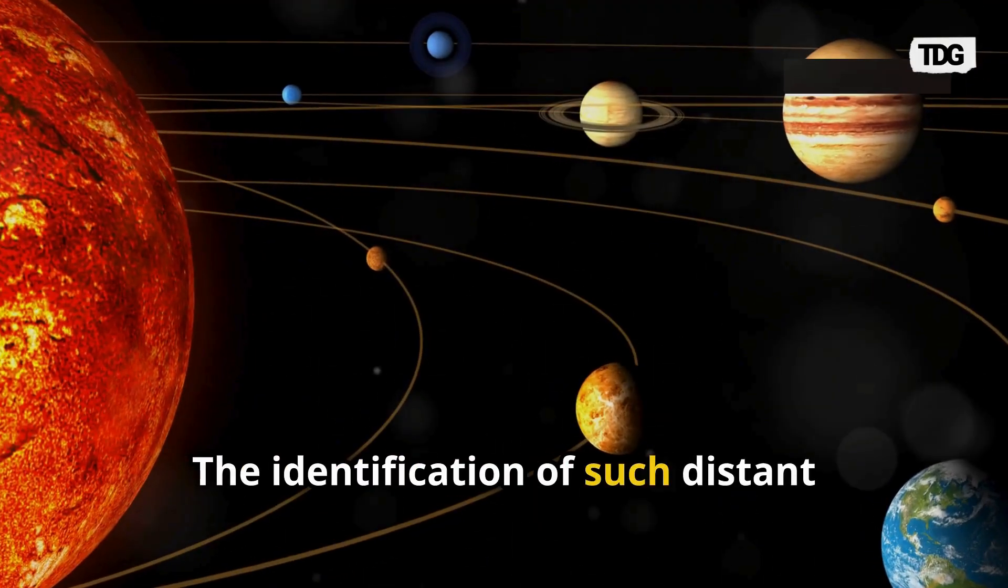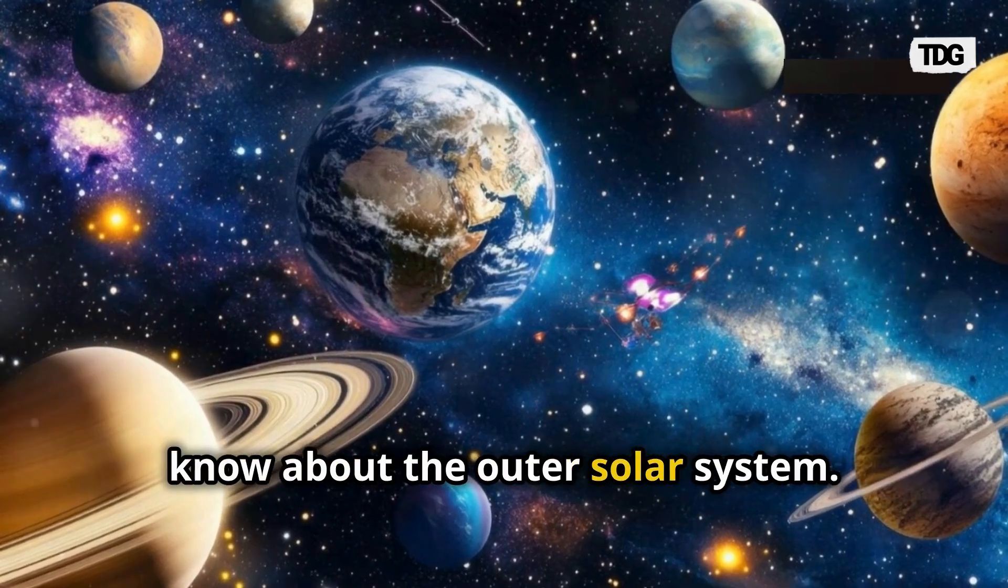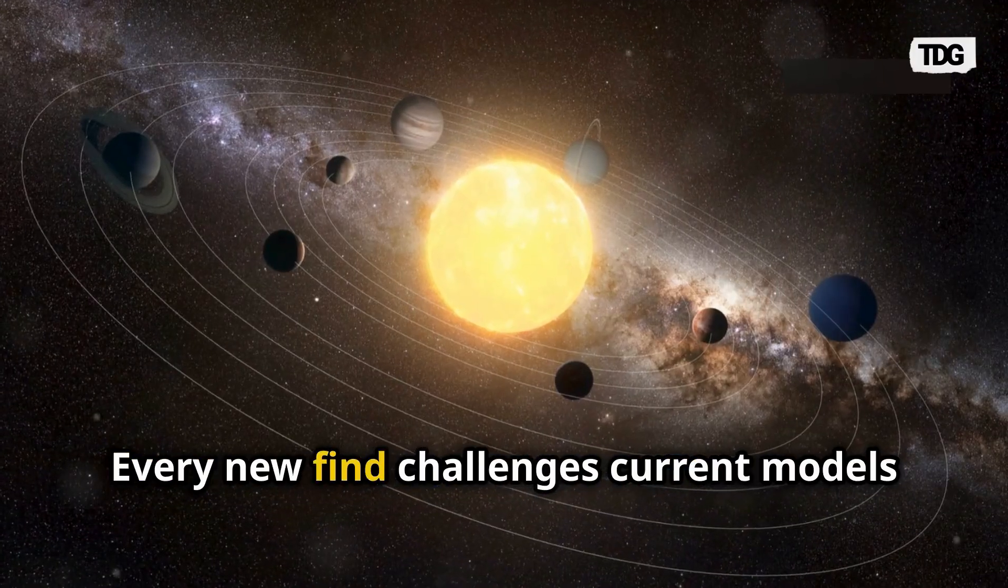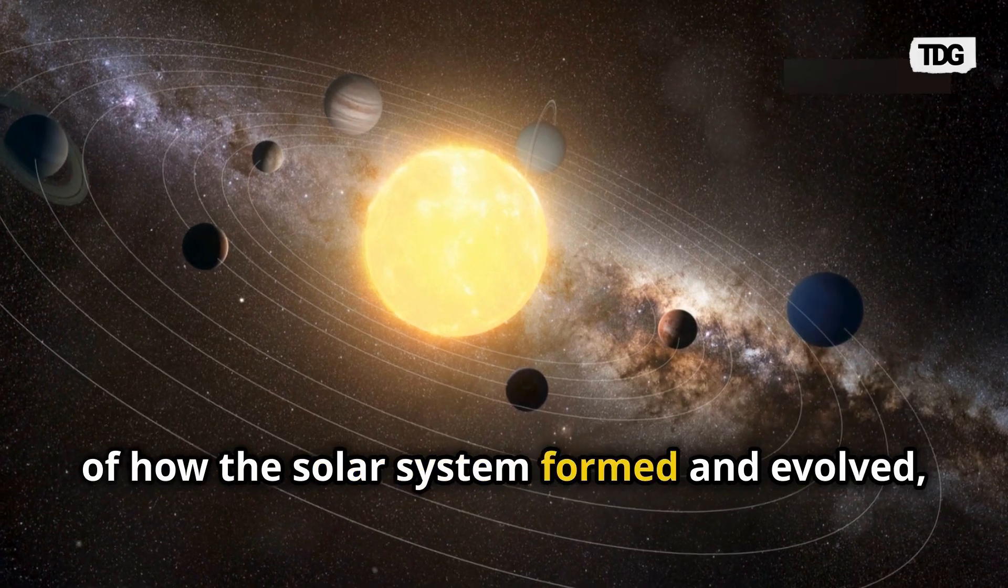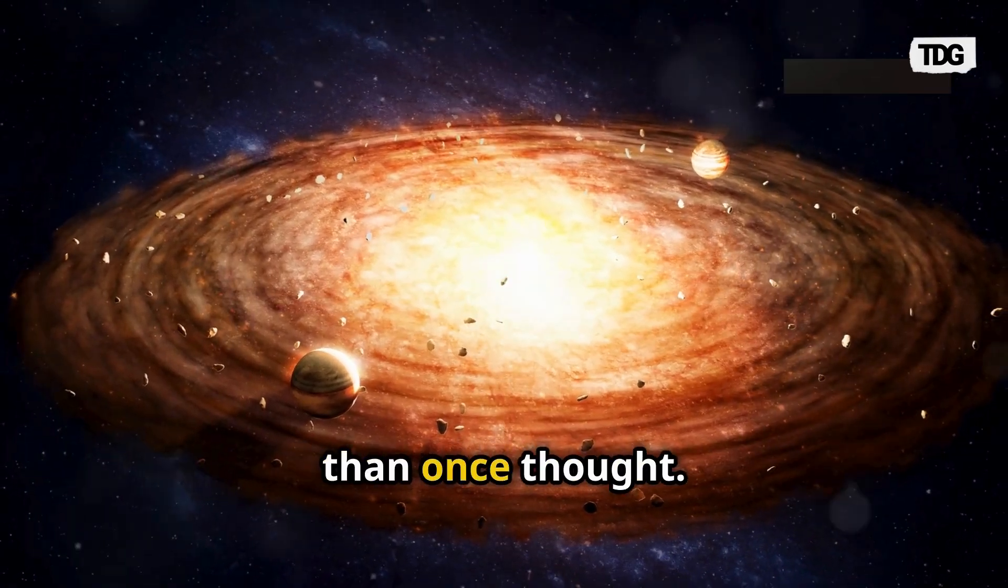The identification of such distant objects highlights how little we still know about the outer solar system. Every new find challenges current models of how the solar system formed and evolved, suggesting that it is far more complex than once thought.